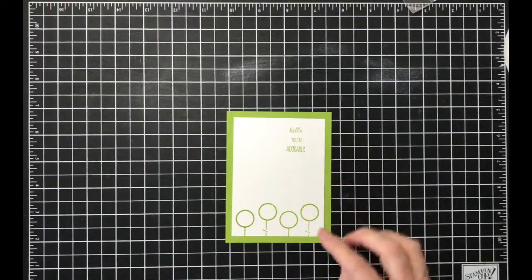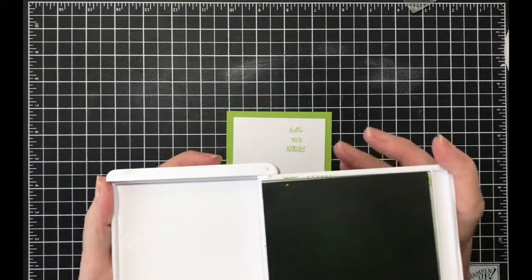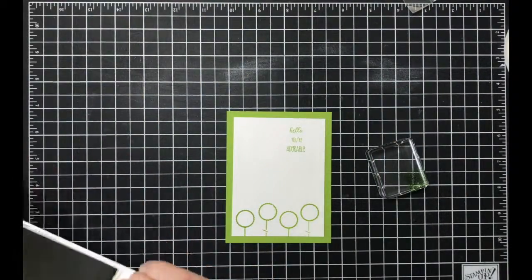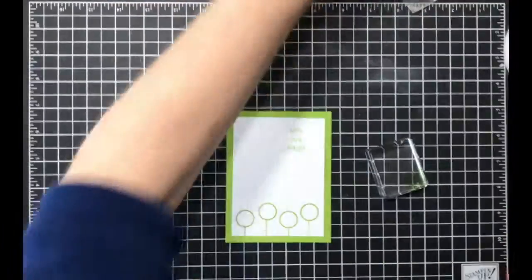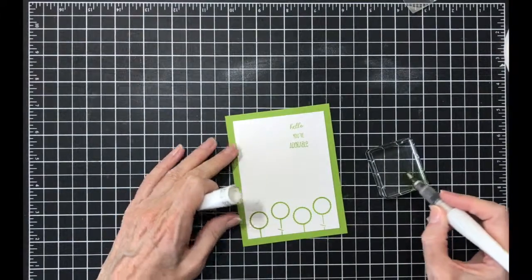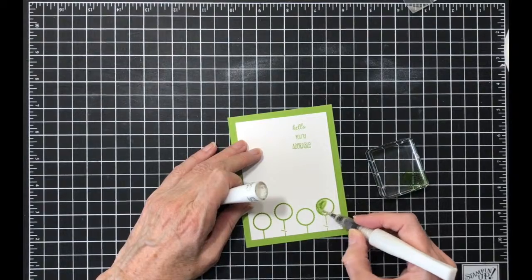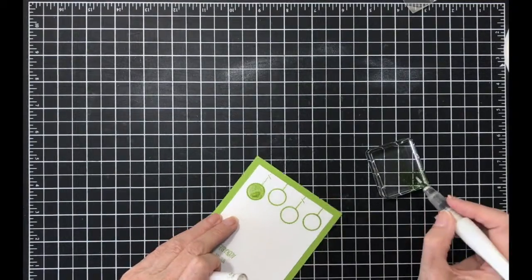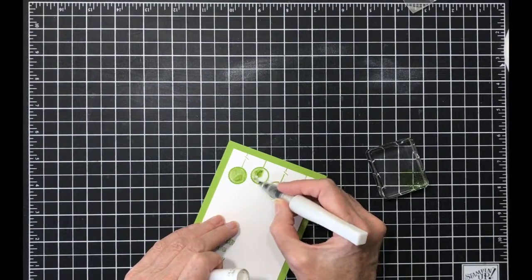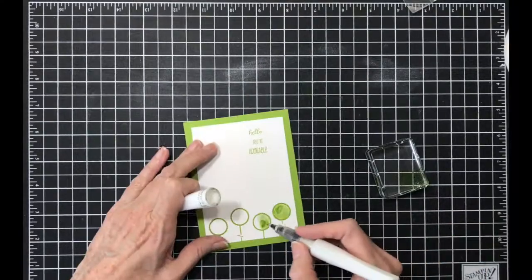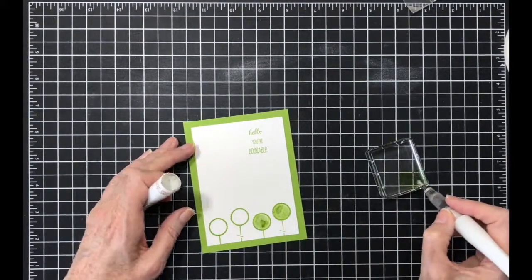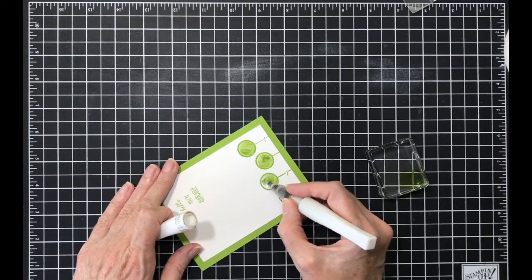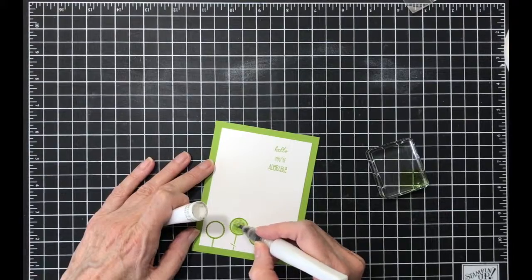Then what I'm gonna do to give the center of those flowers some interest, I'm gonna take a block and I'm gonna put some ink on it. And I'm gonna use my Wink of Stella pen and I'm gonna pick up some of that ink and color in the center of my flower. I need to keep that darker spot in the center because then it would look like the center of a flower.